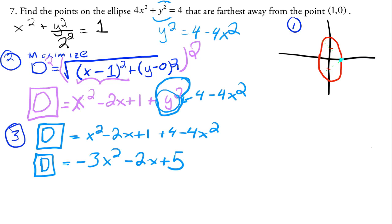Okay, and then the fourth step is to optimize. So what this means is we get the derivative. So the derivative of the distance squared is -6x - 2. Set it equal to zero and we get that x is equal to -1/3.